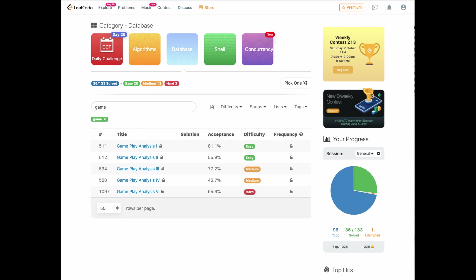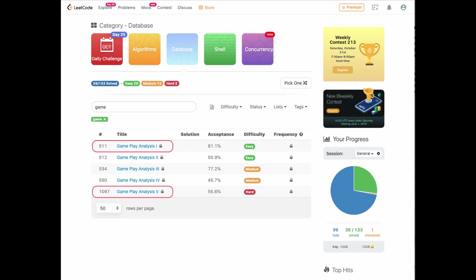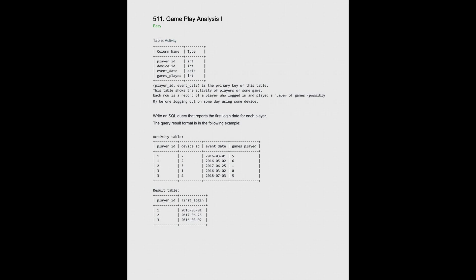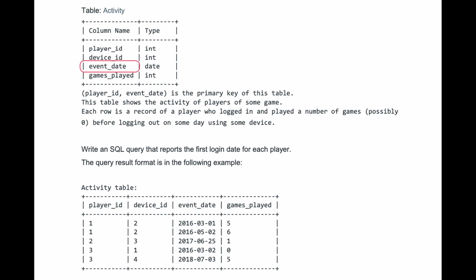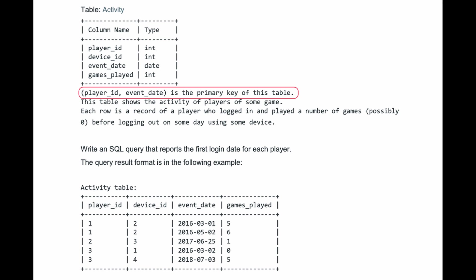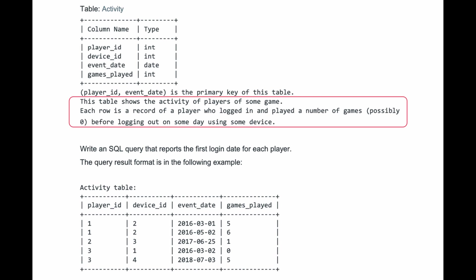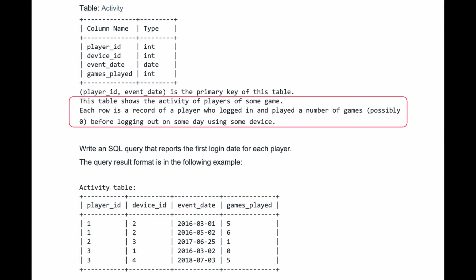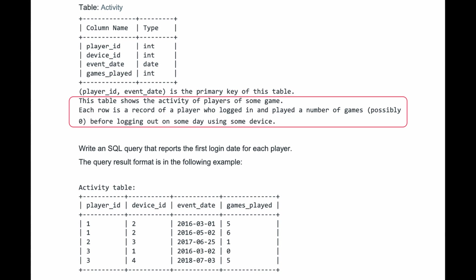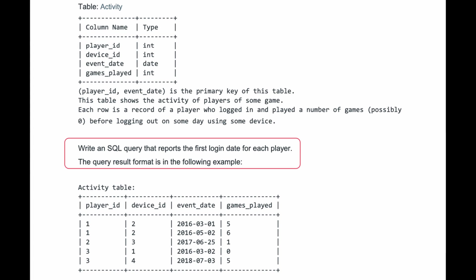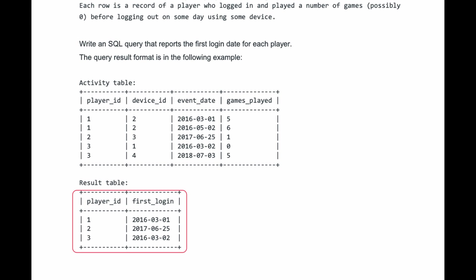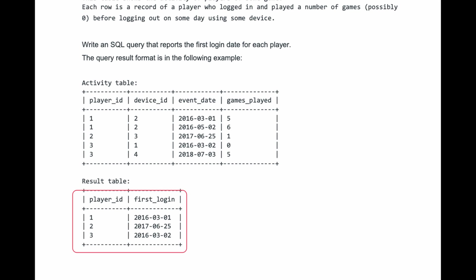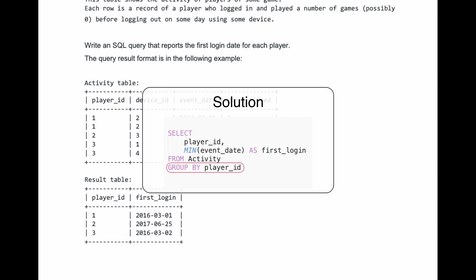You can find five questions on gameplay analysis on LeetCode, ranging from easy to hard level. Let's take a quick look at the first and last questions to compare the level of difficulty. For the first question, it provides an activity table with four columns: player ID, device ID, event date, and games played. Player ID and event date are the primary key of the table. Each row is a record of a player who logged in and played a number of games before logging out on some day using some device. The question asks you to write a SQL query that reports the first login date for each player. For this question, we just need a simple GROUP BY to get the result.